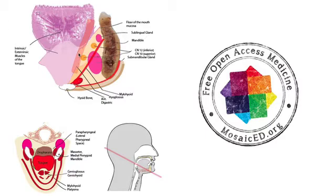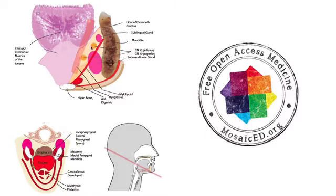Very important in defining the two further subdivisions is the mylohyoid muscle. Extending from the hyoid to the mylohyoid ridge — a ridge running along the internal surface of the mandible — it creates above it the sublingual triangle, and beneath it the submaxillary triangle.